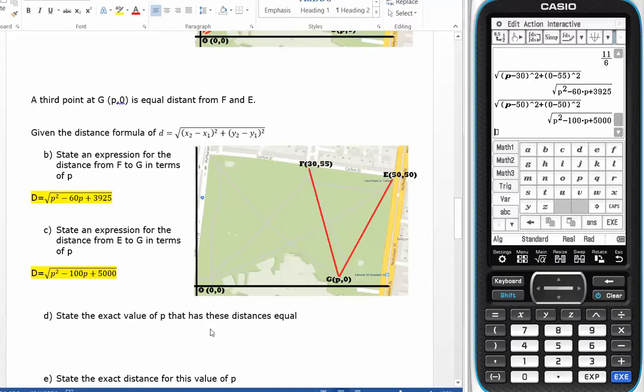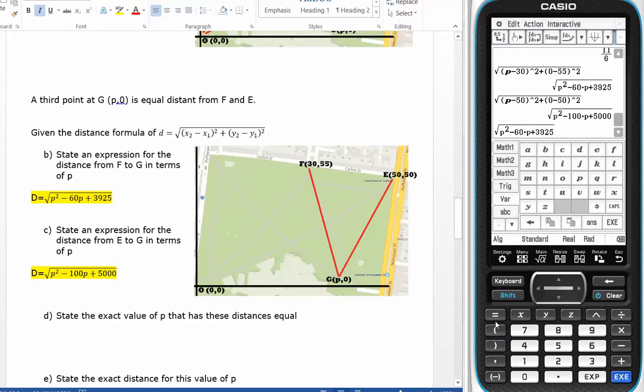State the value of P where these distances are equal. If this distance equals this distance, then what I need to do is to set them equal to each other and then solve for P.